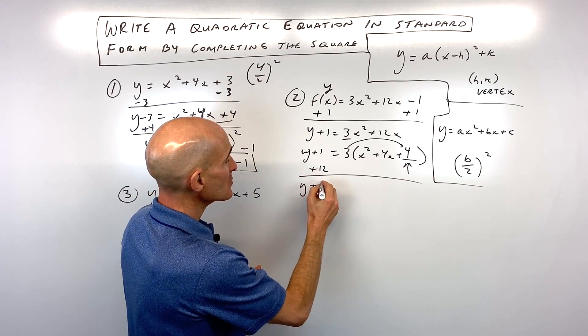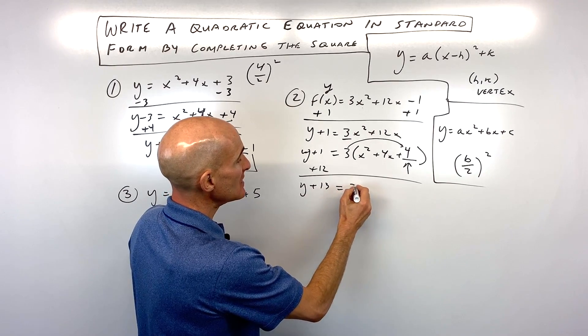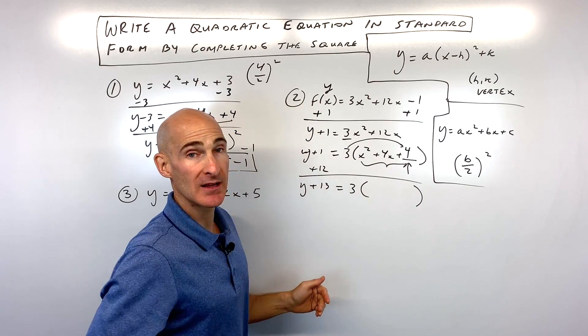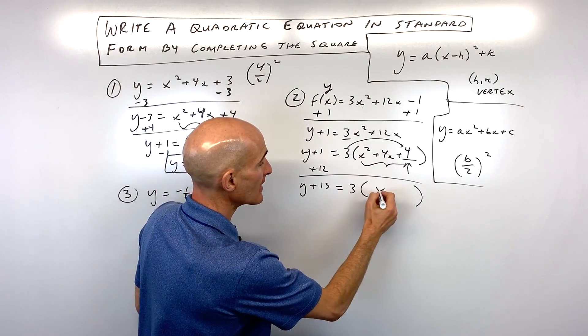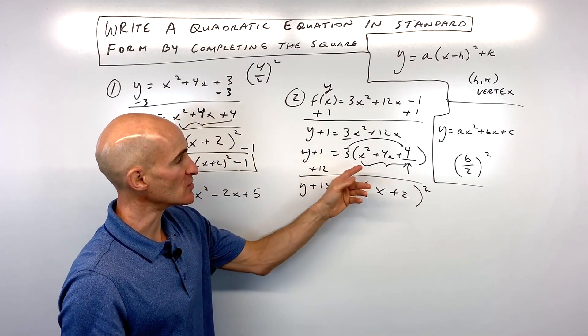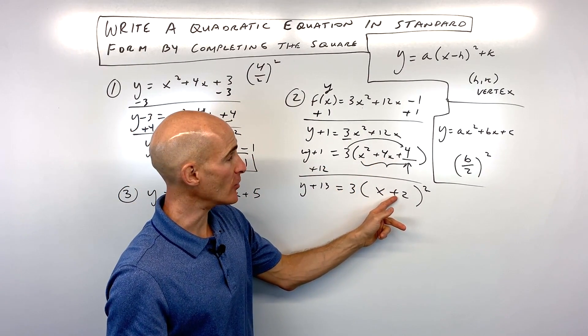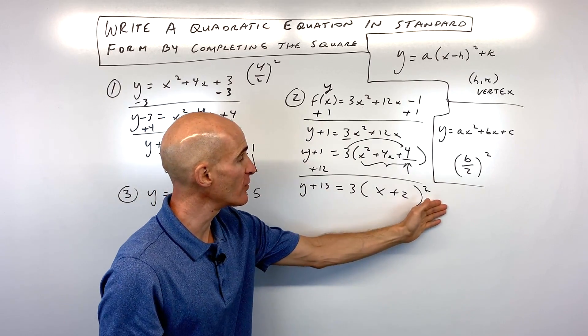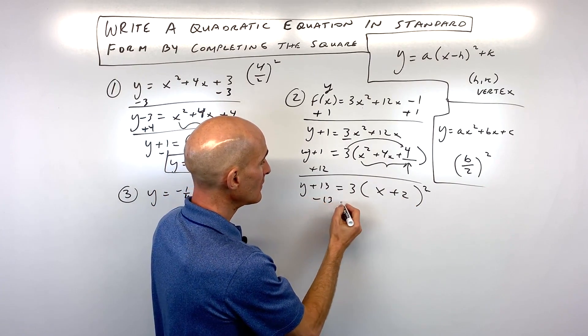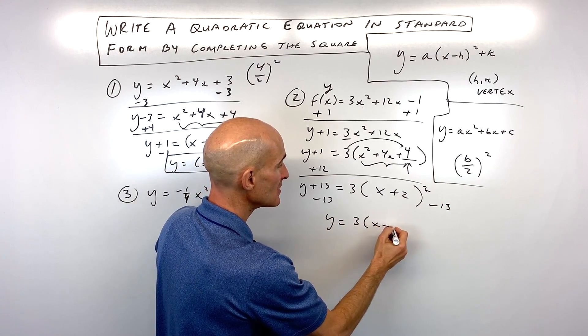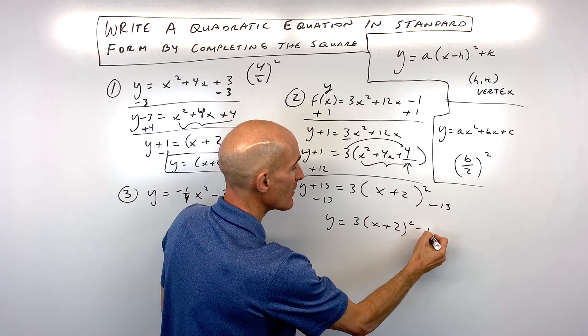And now what I'm going to do is I'm going to factor this quantity in the parentheses, and it's going to be x plus 2 squared. Very similar to this previous problem. So it's always half of that b value. If this was minus 4x, it would be minus 2. The last thing is to move the 13 to the other side to get the y by itself. So you can see our final result is 3 times x plus 2 squared minus 13.